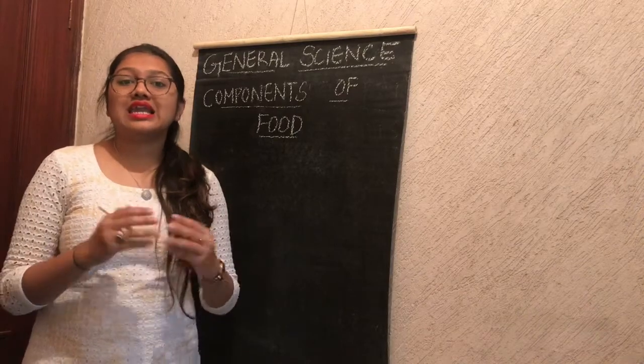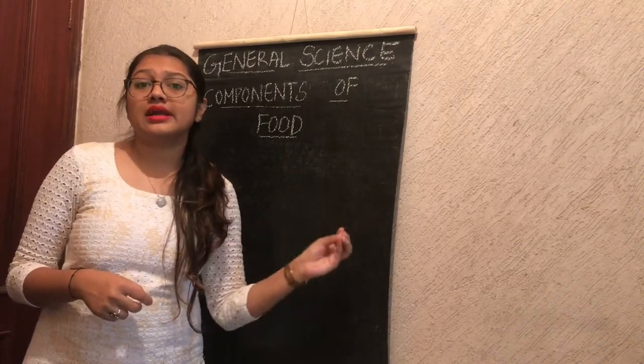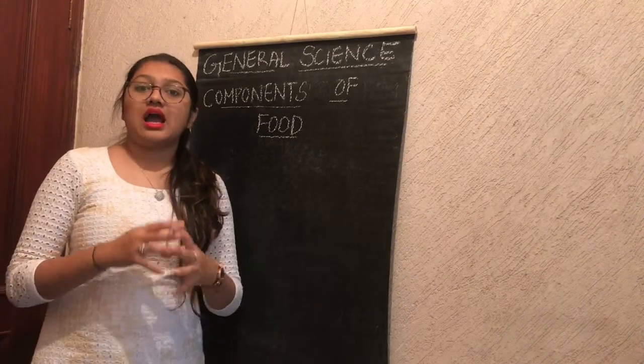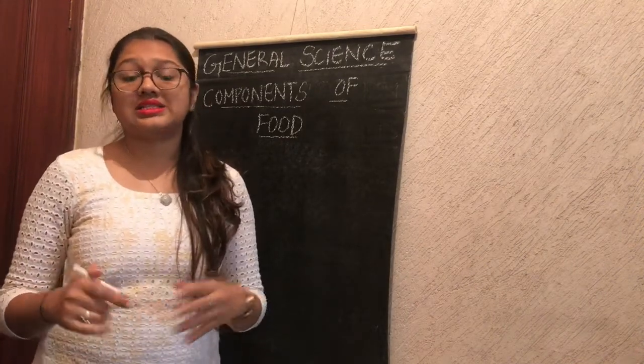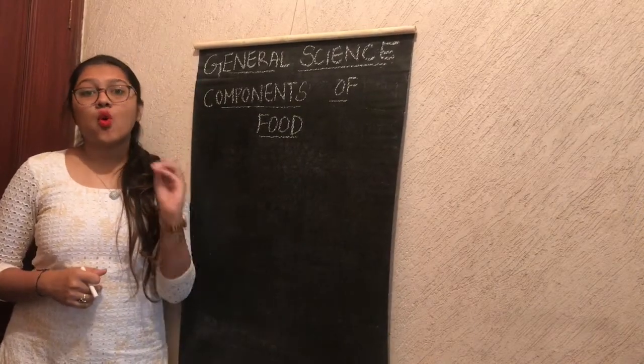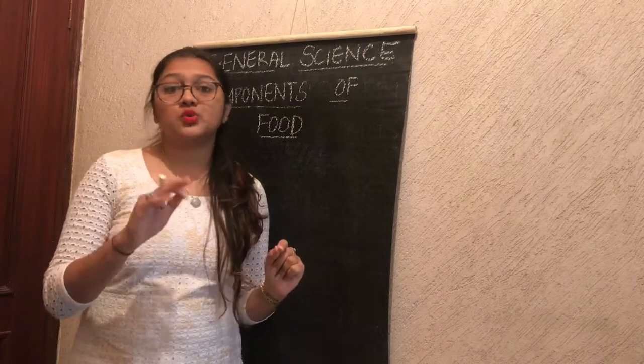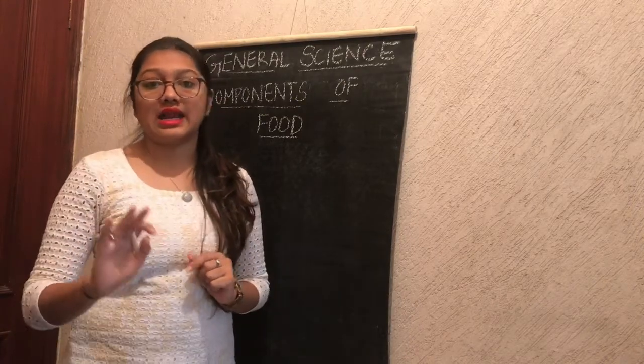Today let us learn about what different items contain. As we have learnt in the last class that each dish is made of one or more ingredients, which we get from plants and animals.